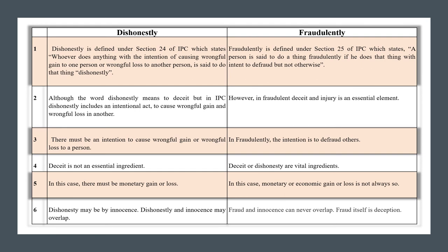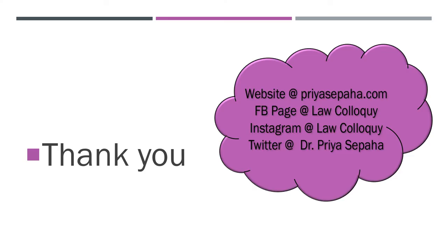Fifth difference: in dishonestly there must be monetary gain or loss — paiso ka loss ya gain hona zaroori hai. Whereas in fraudulently, monetary or economic gain or loss is not always necessary. Sixth: dishonestly, as an exception, can be done by innocence — it can happen by mistake. But fraud is never innocent — dhoka kabhi bhi innocent se nahi diya jata — fraud is always with deception. So this is the difference between dishonestly and fraudulently in IPC.